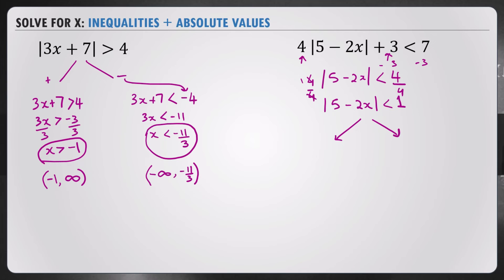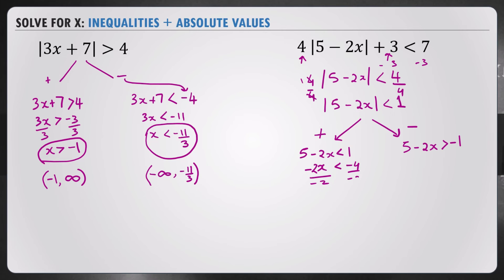We split into positive and negative. For the positive case: 5 minus 2x is less than 1, so negative 2x is less than negative 4. Dividing by negative 2 on both sides — the sign flips because we're dividing by a negative number — and we get x is greater than 2.